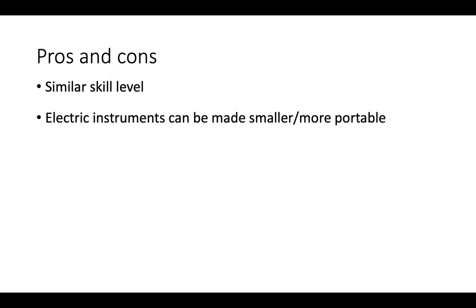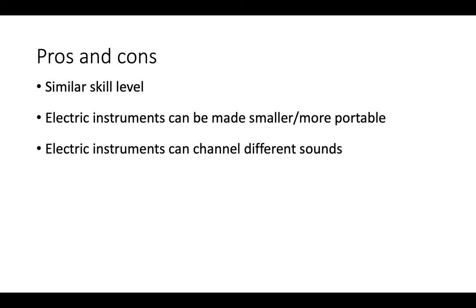Electric instruments can be made smaller and more portable, like we saw with the drums, which need a lot of space to create the vibrations that create music. It's the same with, for example, an electric guitar, which doesn't need to have that hollow body that an acoustic guitar has to create the sound. You can make them much smaller and much easier to carry around. Electric instruments can also channel different sounds — you can program them to make a different sound. A drum pad, for example, is a great piece of hardware: you hit the pad and it will create a drum sound, a sound effect, or play a recording. Electric instruments can channel all different sounds.